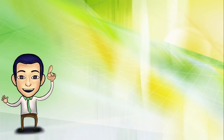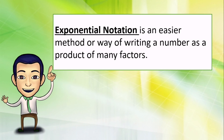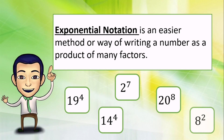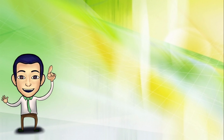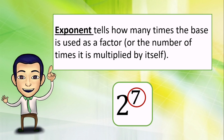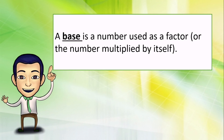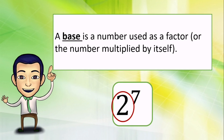I hope you have learned a lot from today's lesson. Just remember that exponential notation is an easier method or way of writing a number as a product of many factors. Exponent tells us how many times the base is used as a factor or the number of times it is multiplied by itself. A base is a number used as a factor or the number multiplied by itself.